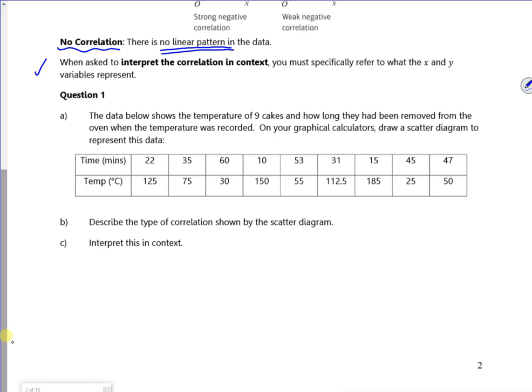So the data below shows a temperature of 9 cakes and how long they have been removed from the oven when the temperature was recorded. So we can draw it on our scatter graph diagram, which is quite a scatter graph. So I'm just going to pause it and get the calculator up.